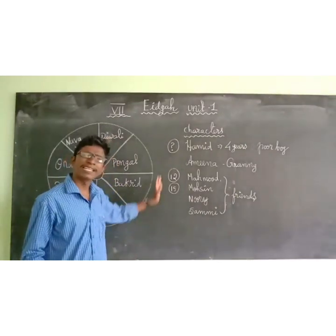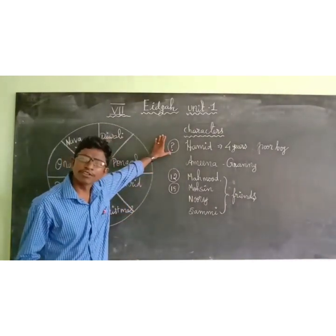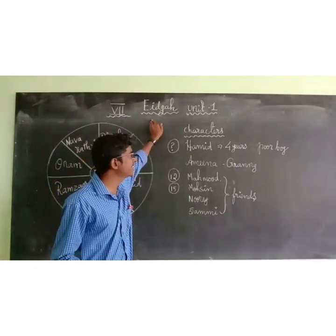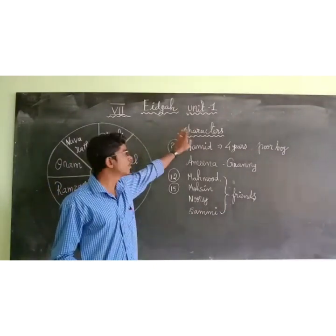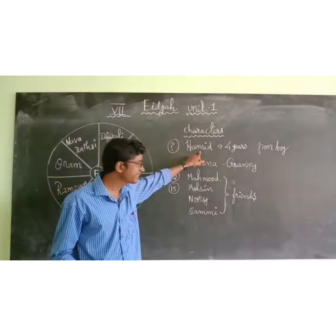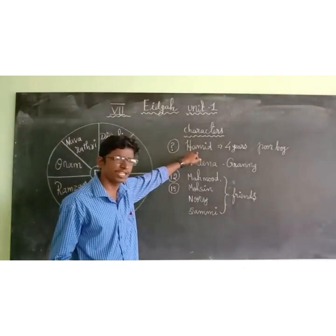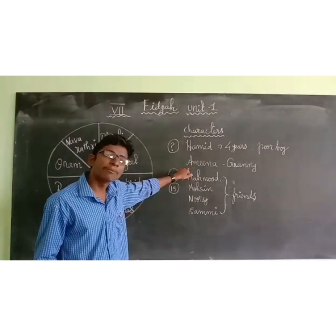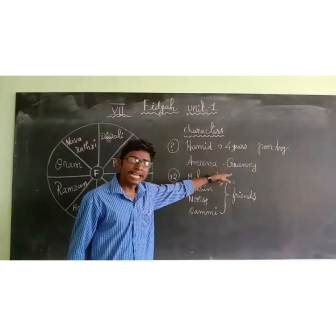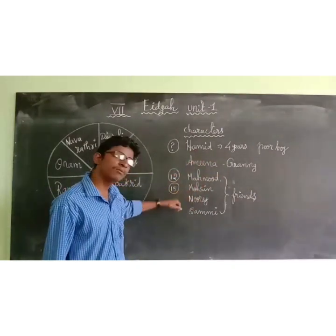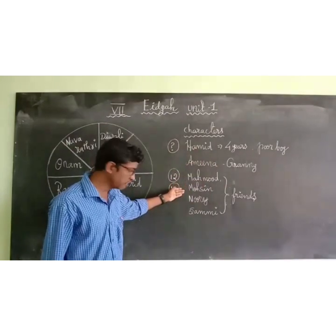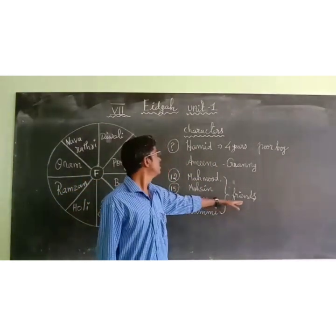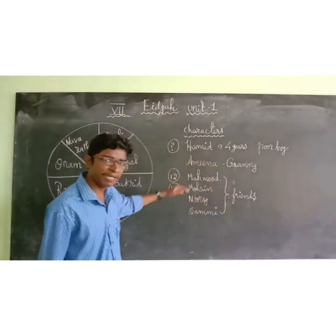Let us go into the lesson, into the fine story. Before going into the story, we have to know what characters are there. The first character is Hamid — he is the main character. The second character is Amina, the grandmother of Hamid. And then a few more characters: Mahmoud, Moshin, Nuri, and Shami — these are Hamid's friends. These are the main characters.